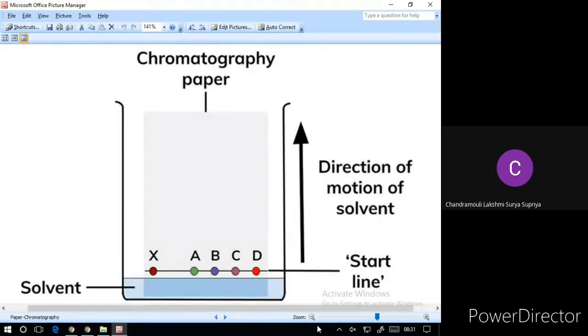A paper chromatography variant, two-dimensional chromatography, involves using solvent and rotating the paper 90 degrees in between. This is useful for separating complex mixtures of compounds having similar polarity, for example, amino acids.